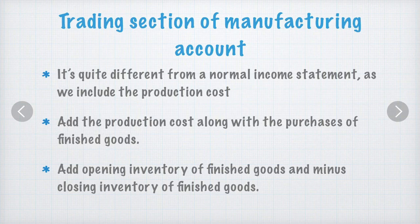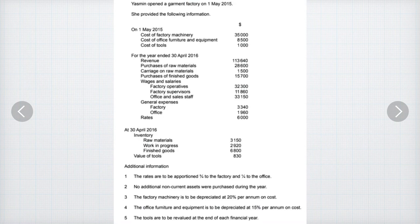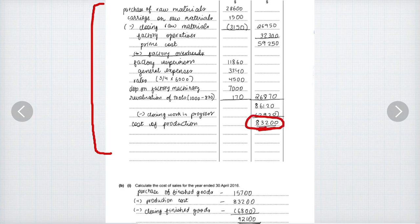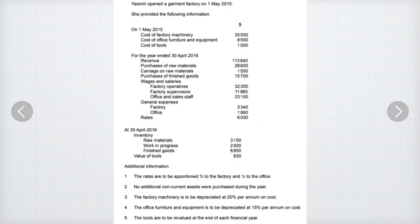Now let's see an example question. This is about Yasmin, who opened a garment factory on 1st May 2015. They asked you to prepare a manufacturing account — that part has been done and the cost of production found is $83,200. Then they ask you to calculate the cost of sales for the year ended 30 April 2016. For cost of sales, we need the purchase of finished goods plus opening inventory of finished goods, minus closing inventory of finished goods, plus the production cost. In this question, we don't have any opening inventory of finished goods.